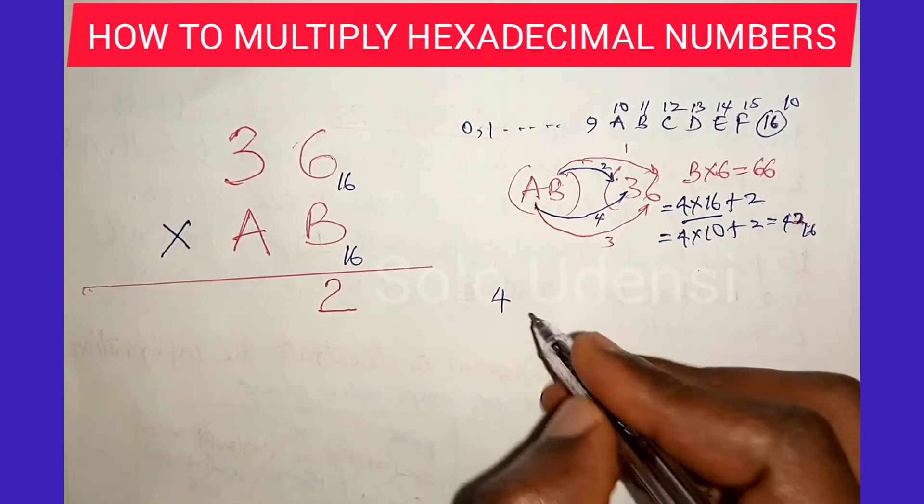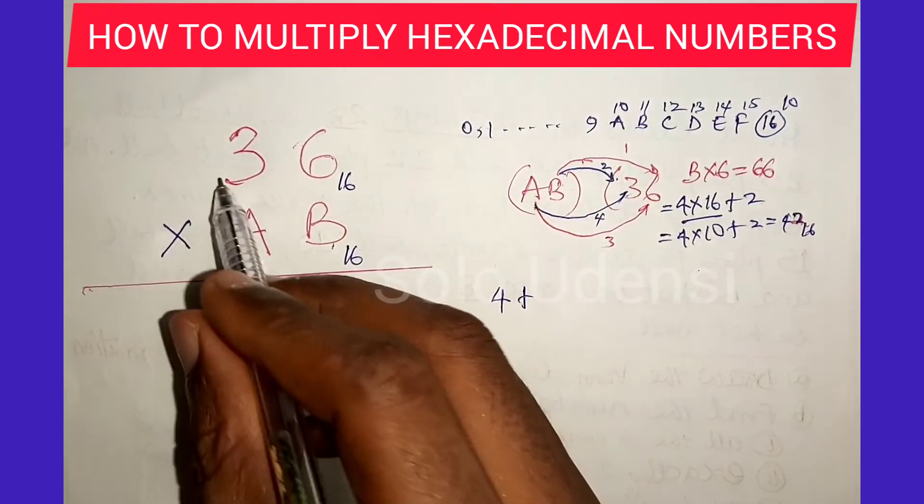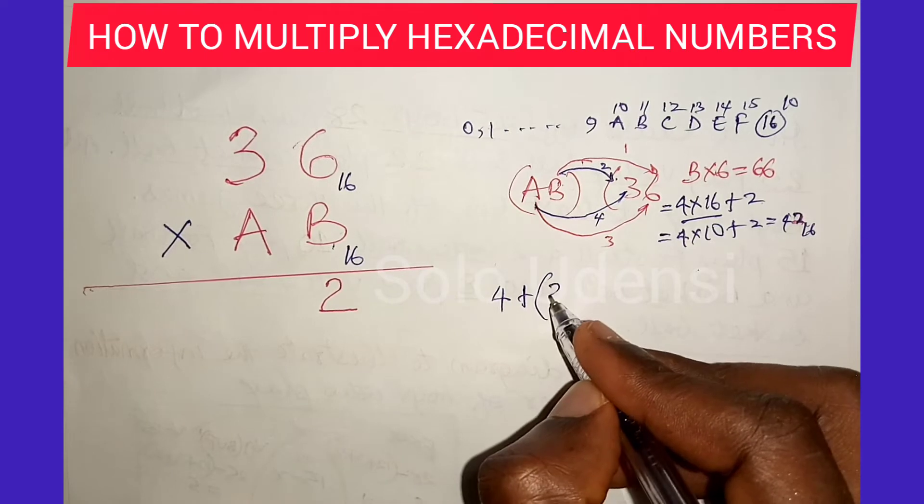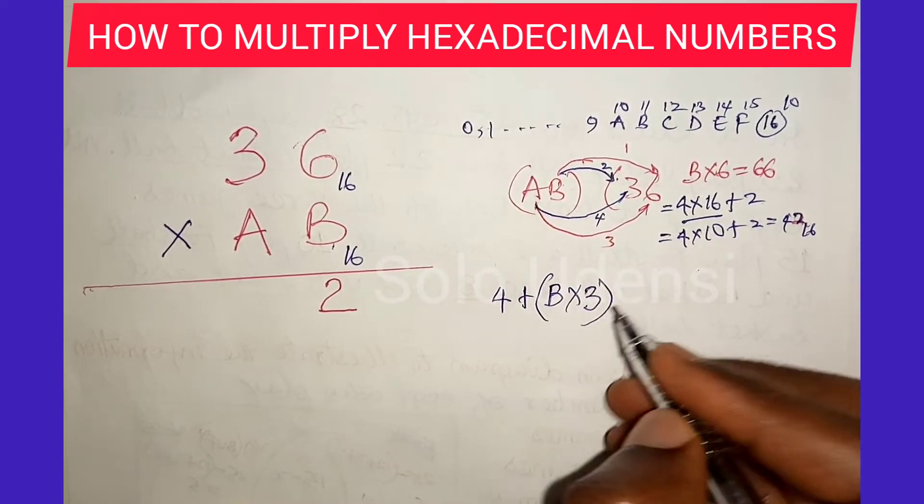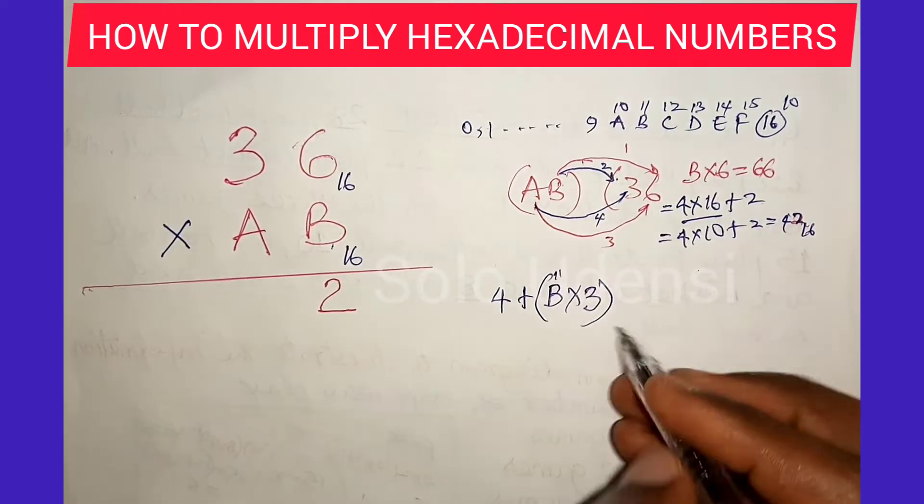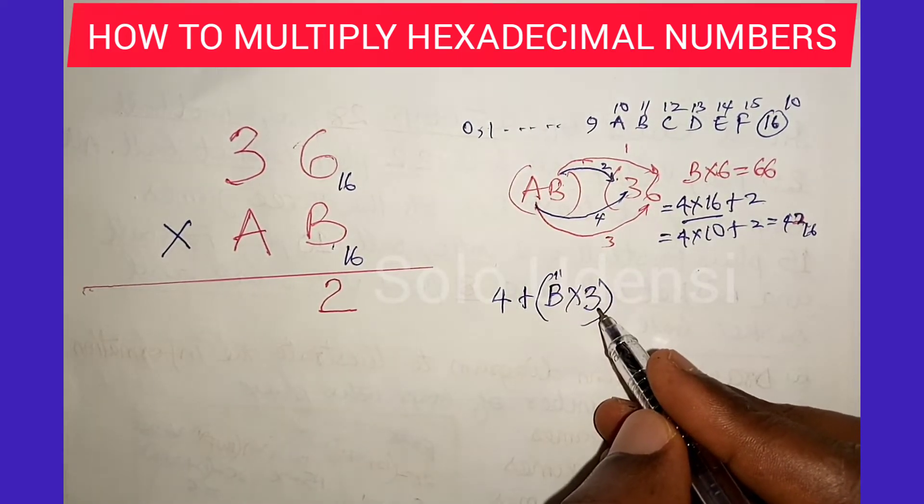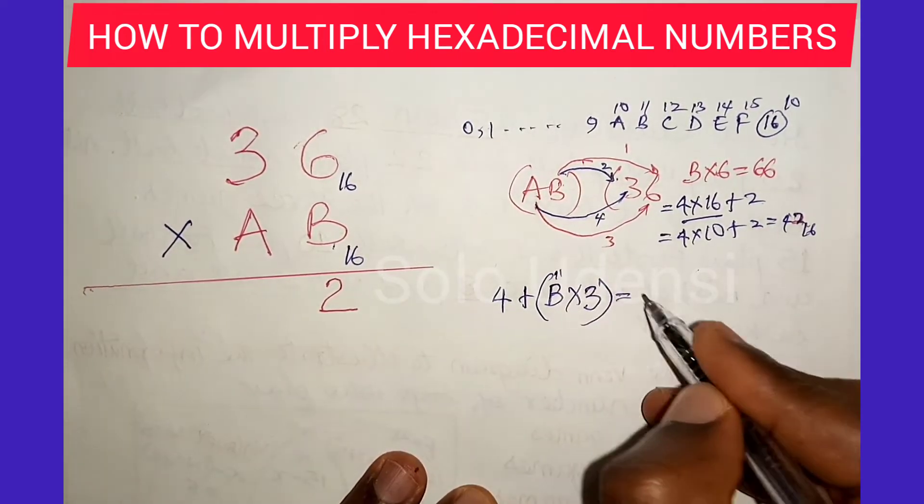The 4 that we have carried plus B times 3. Remember that B is 11, so 11 times 3 is 33. 33 plus 4 is 37.